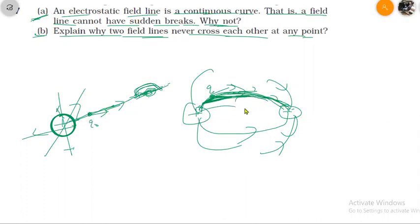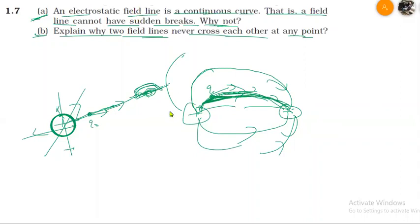It's not that the field line goes here and then starts again from somewhere else. It will come here and it will come here continuously. If it goes further, it will end at a negative charge. So you can see that there will not be a sudden break.